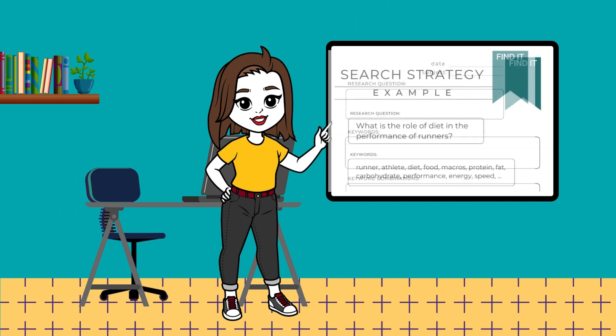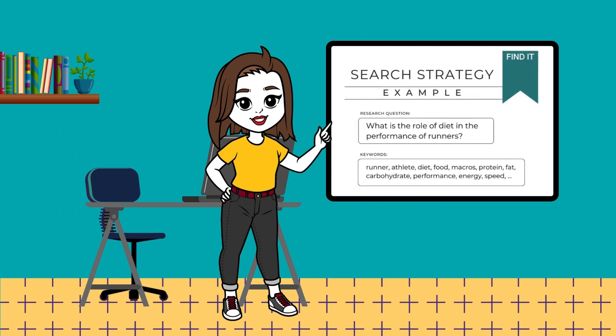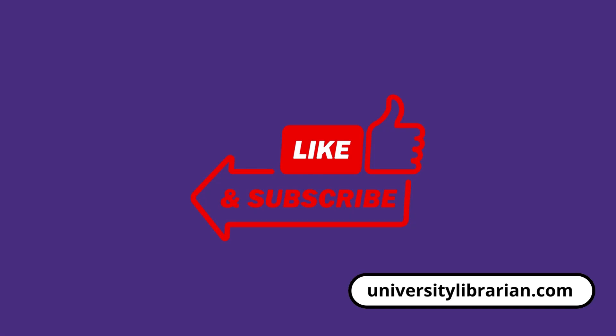At universitylibrarian.com we have tools to help you define your search topic, capture your list of keywords, and document the combinations of keywords and phrases you've used in your search. The tools are available to buy through the universitylibrarian.com website. Check out the links in the video description for more information. Thanks for joining us today.